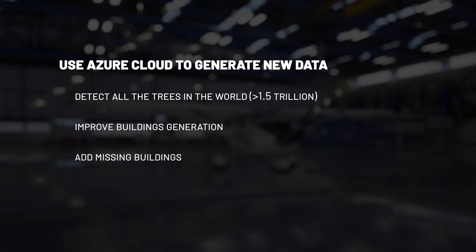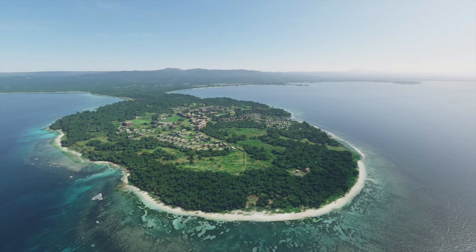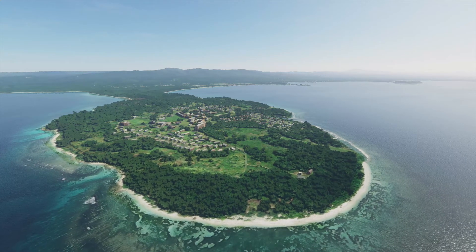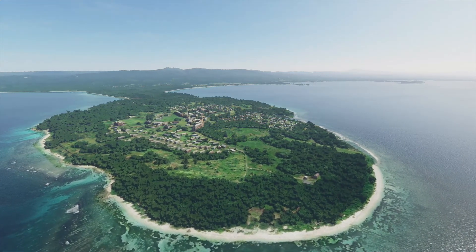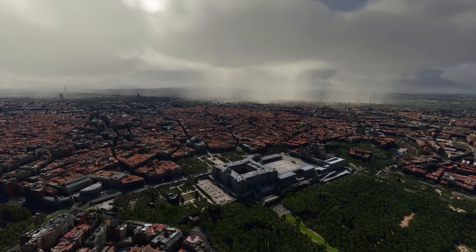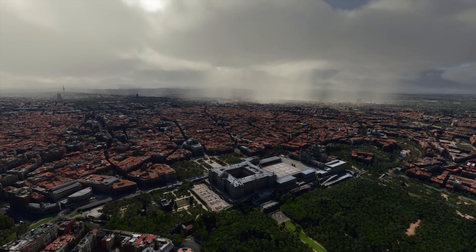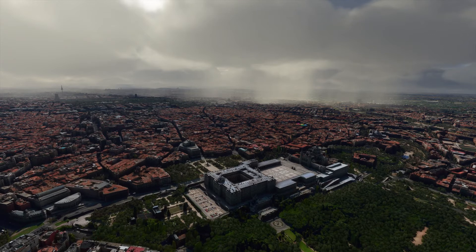Azure also allows us to improve the quality of Bing Maps aerial imagery. Sometimes an area can be captured with clouds on top of it, and we can detect those and replace them with texture synthesis that happens at runtime. To put some images on what I'm talking about, this is an island near New Guinea. If we only had Bing Maps data there, the island would be kind of flat and you wouldn't have the trees and the buildings. Thanks to the detection we could run on Azure, we know where to place trees, where to place buildings, and what the buildings should look like — creating a much more believable and accurate representation of the Earth.